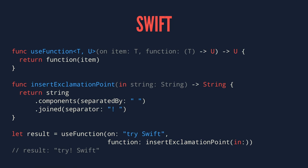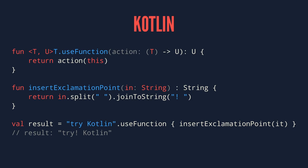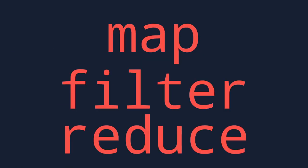In Kotlin, generics are even more powerful because you're able to actually create an extension function — which is similar to a Swift extension — on a generic type. So now you can call this on any type and apply any function designed to return any other type. And this language feature allows the use of some of the same major collection methods like map, filter, and reduce.